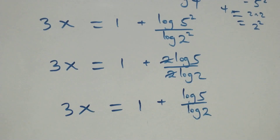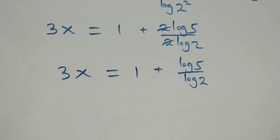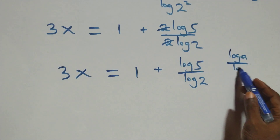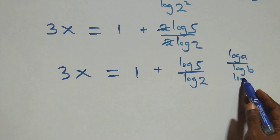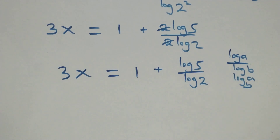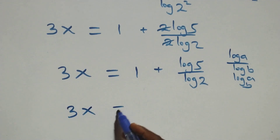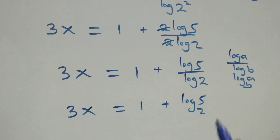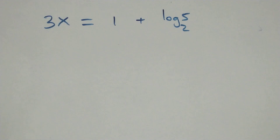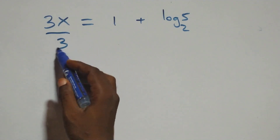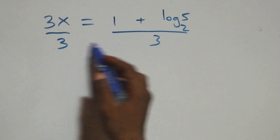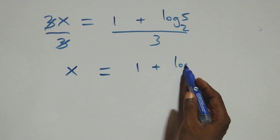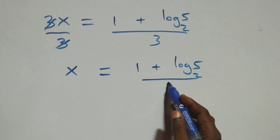We apply the change of base rule: when we have log a over log b, this is the same thing as log a to base b. So what we have becomes 3x equals to 1 plus log₂5. Then next step, we divide both sides by 3. The 3s cancel each other, and we have x equals to (1 plus log₂5) over 3.